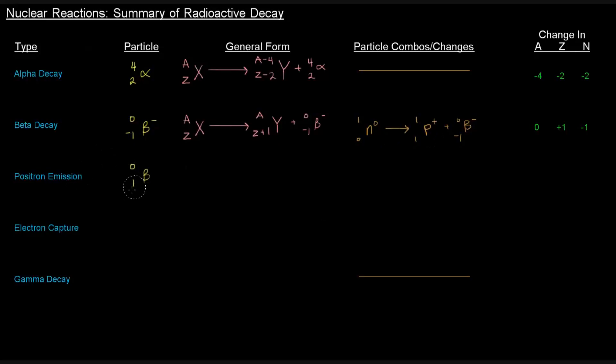Positron emission looks similar to the beta particle, except the mass number is the same, the Z is 1, and the charge is positive. We start with AZX, mass number stays the same, the Z decreases by 1 with the emission of this particle. One proton is converted into one neutron and one positron.